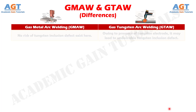Difference number ten: no risk of tungsten inclusion defect exists in gas metal arc welding. Whereas owing to the presence of a tungsten electrode, gas tungsten arc welding may lead to an undesirable tungsten inclusion defect.